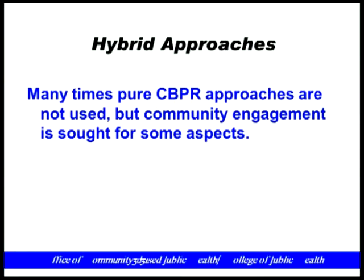More common than the pure practice of these principles is what we call a hybrid between traditional and participatory approaches, where some but not all aspects are implemented. A project may begin as traditional research but evolve to greater community engagement over time. There may also be projects where the community drives issue selection but researchers take more control over technical aspects like data analysis. Even in strong community-academic partnerships, there may be times when partners must make decisions quickly — for example, to respond to time-limited funding opportunities — precluding full input. These examples exist along a continuum from traditional to pure CBPR.